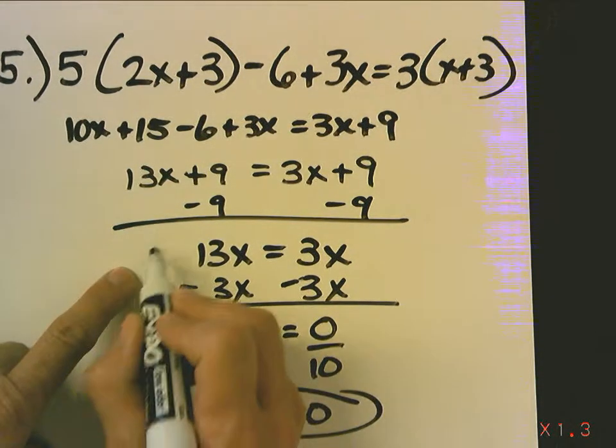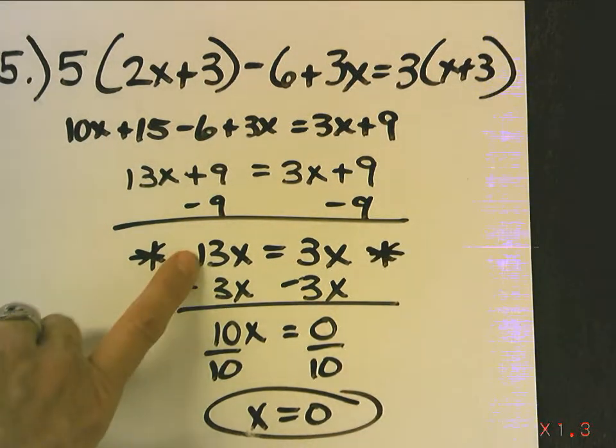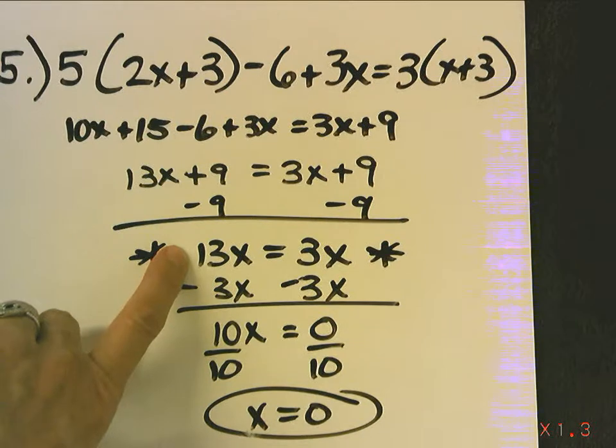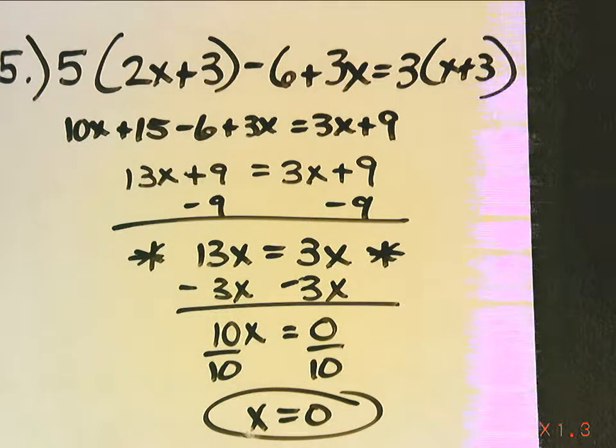So, beware of situations like this. If you end up with a situation where it says 13x equals 3x, or 5x equals 8x, or 9x equals negative 5x, don't assume that's not true. Because 0 will always work in those situations. So, be very careful. Never evaluate the truth value while an x value is there. That's the end of this.